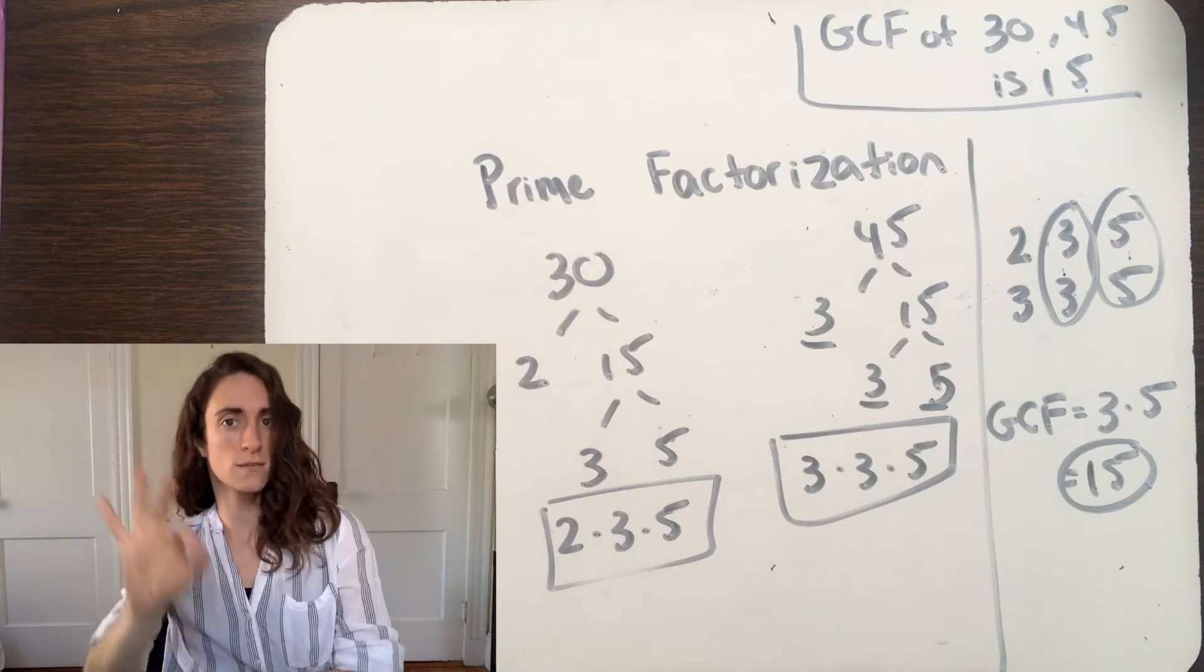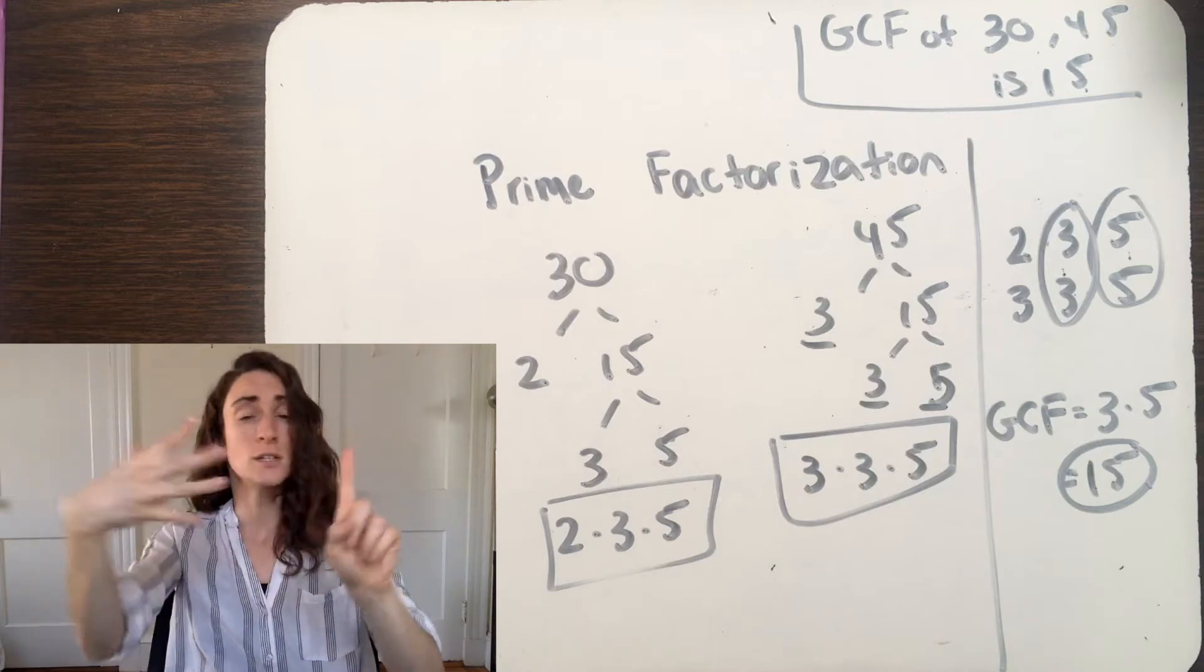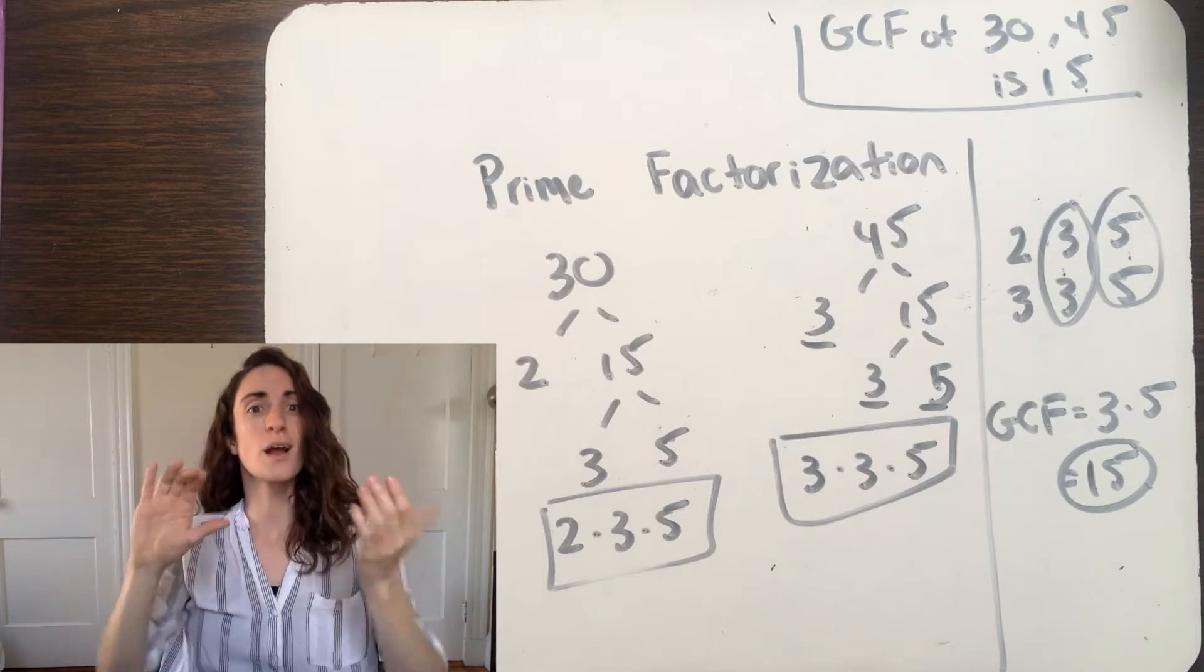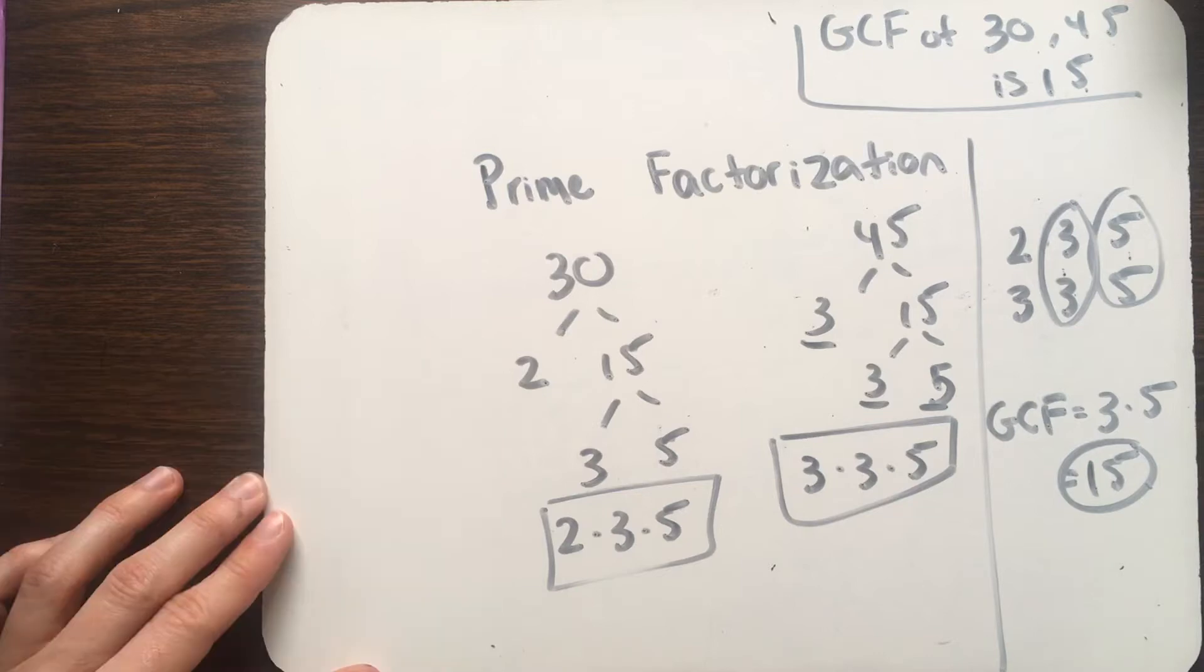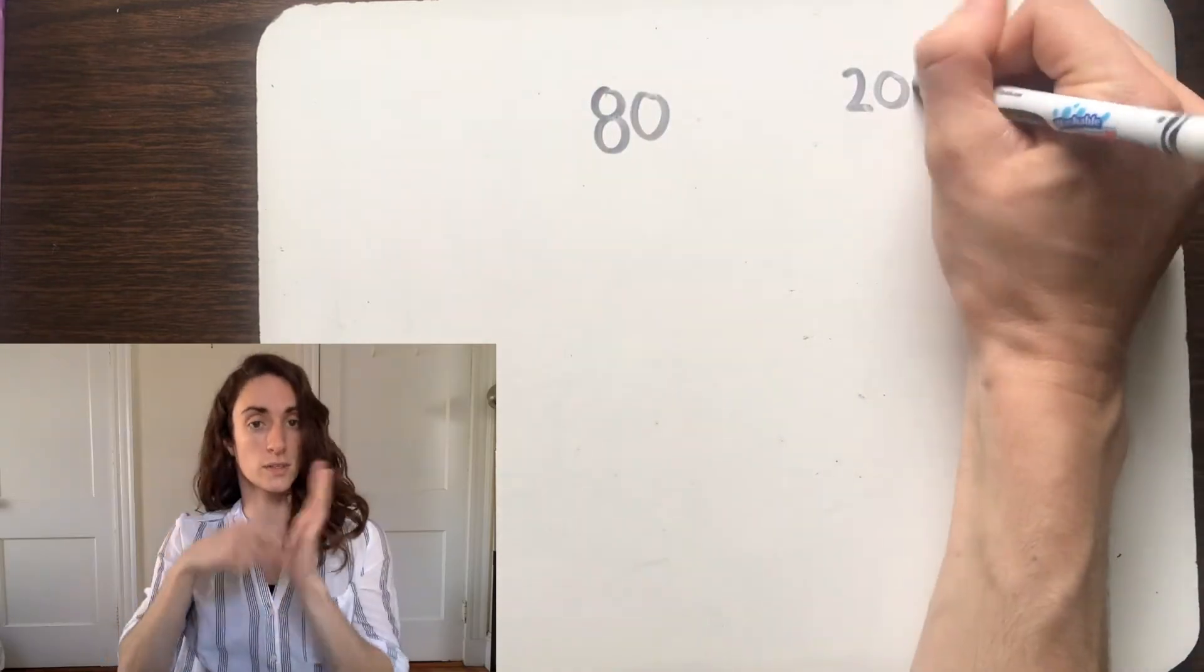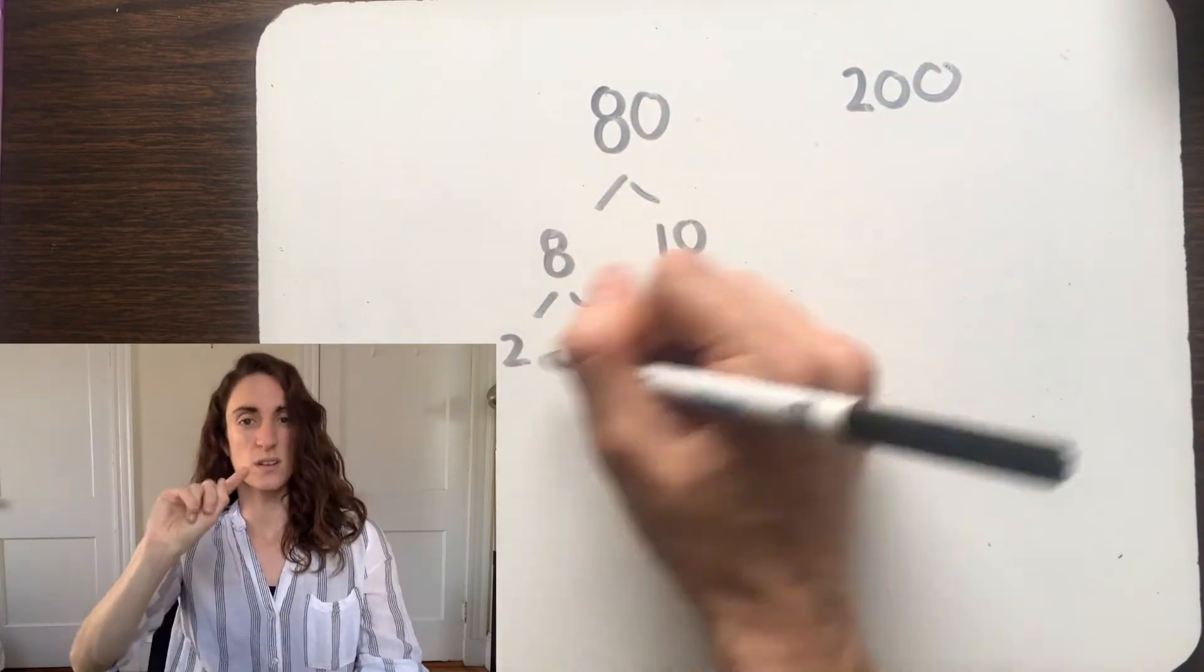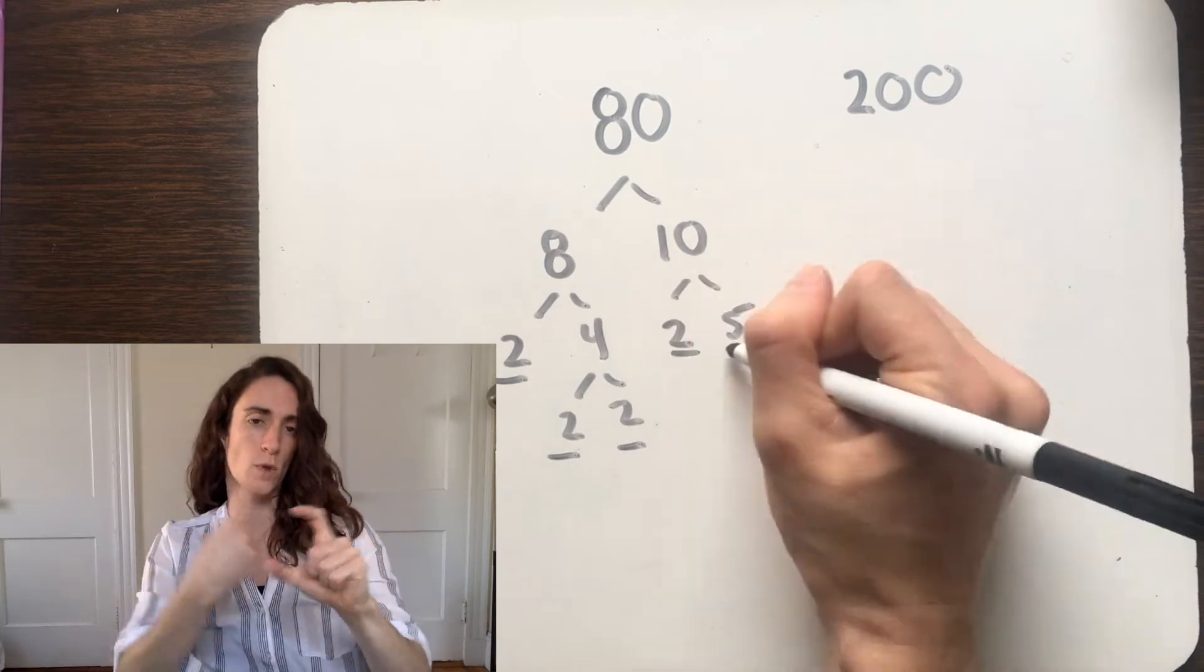The takeaway here is that we don't have to list all the factors of two numbers to find their greatest common factor. We can find their prime factorizations, and the product of their shared elements will be the GCF. Let's look at another example, finding the GCF of 80 and 200, starting by finding their prime factorizations.